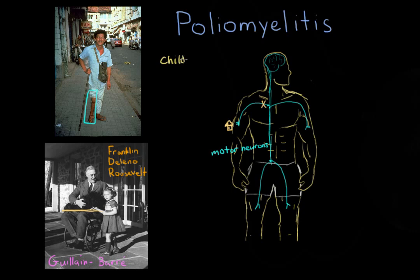First, polio most commonly affects children, particularly those less than six months of age, so FDR contracting polio at age 39 is not very likely. Second, polio causes asymmetric paralysis — the muscles are damaged in a somewhat random process, so having both legs damaged equally is unlikely.